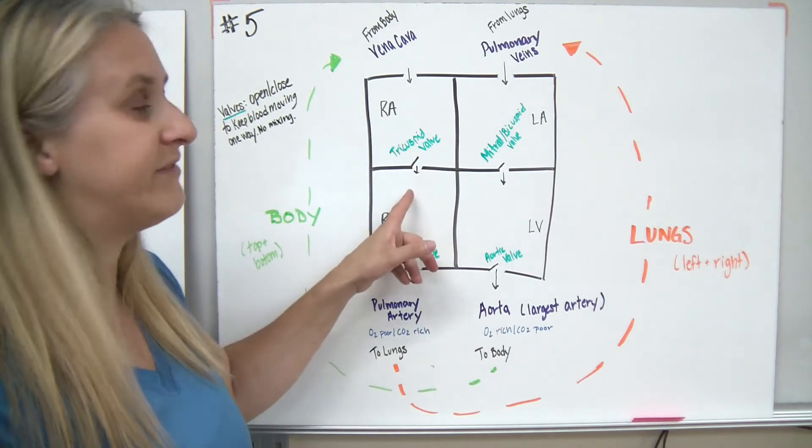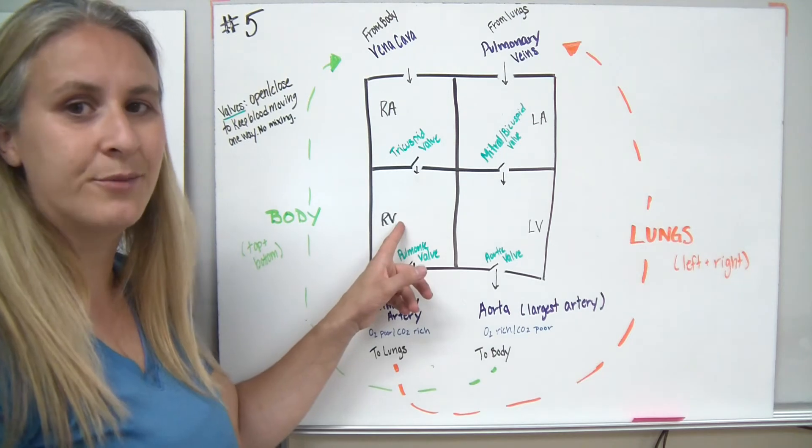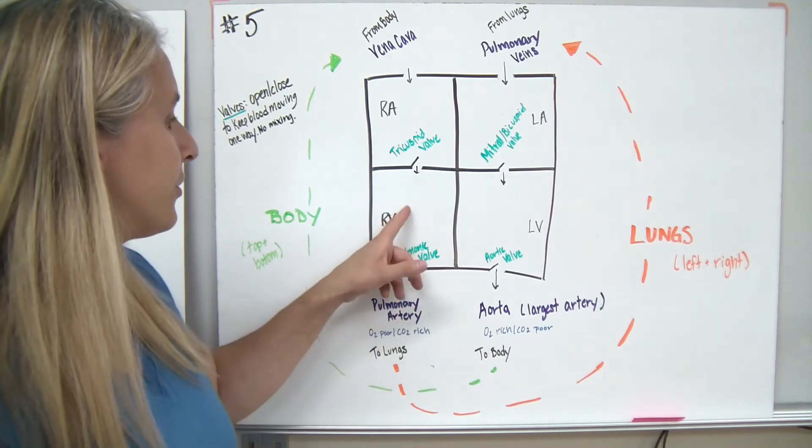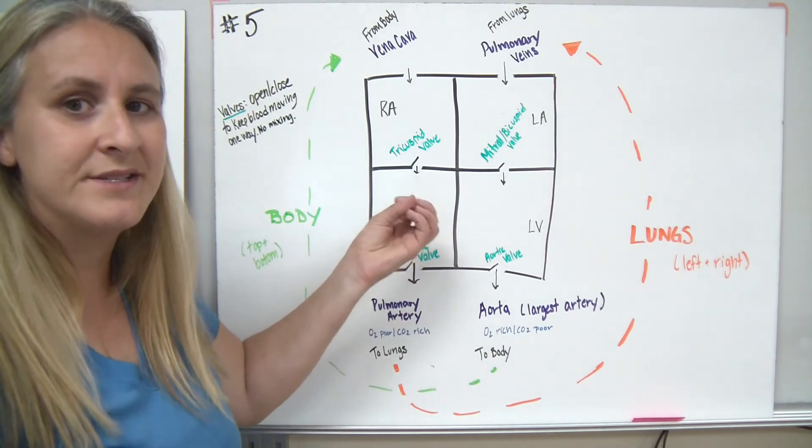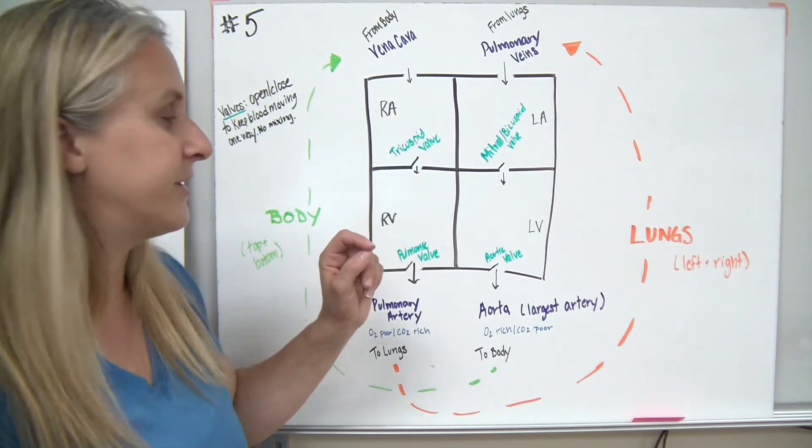So that tricuspid valve, it's called, heads the blood down into the right ventricle. The right ventricle is going to squeeze, and as it squeezes and pumps, it's going to close this valve so that the blood doesn't go back into the right atrium.